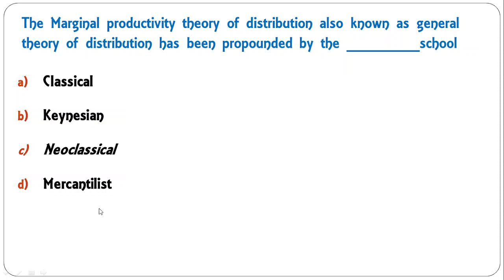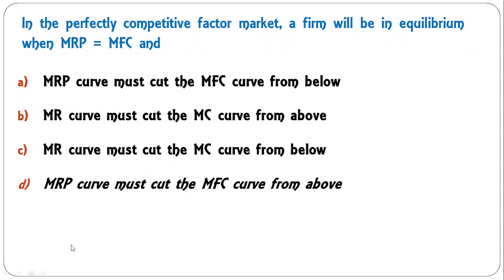The marginal productivity theory of distribution, also known as the general theory of distribution, was propounded by which school of thought — classical, Keynesian, neoclassical, or mercantilist? The correct answer is the neoclassical school, which gave the marginal productivity theory of distribution.